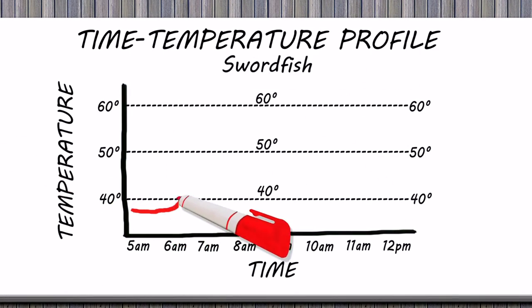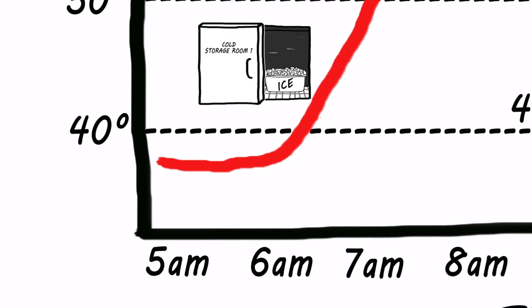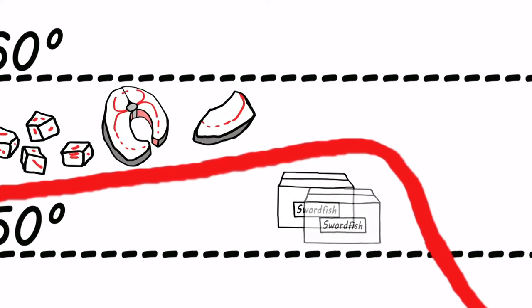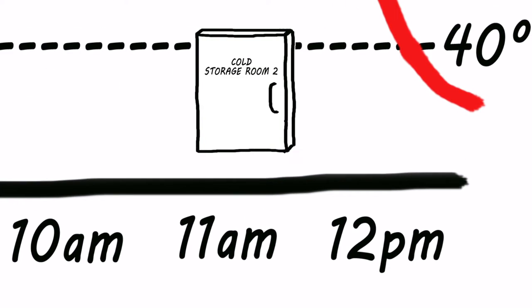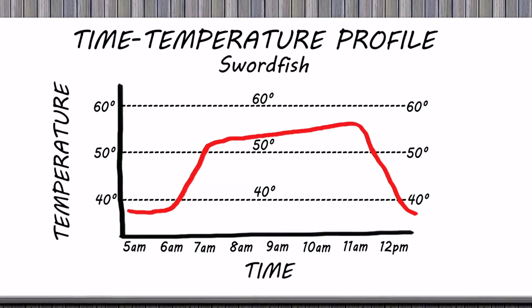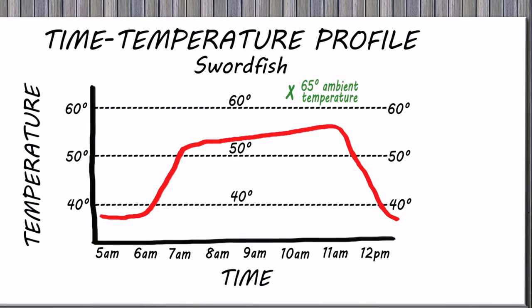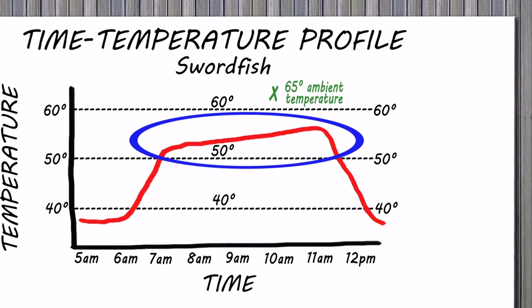This profile shows that the fish is taken out of the refrigerator at 6 a.m. After cutting the fish into loins, chunks, wheels, and steaks, and packing in labeled boxes, the fish is placed back in the refrigerator by 11 a.m. During that time, the highest ambient temperature was 65 degrees Fahrenheit, and the internal temperature of the fish was over 50 degrees for four hours.